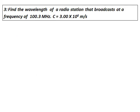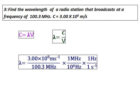Find the wavelength of a radio station that broadcasts at a frequency of 100.3 megahertz; the velocity of light is given. This question is not something new. The only thing is they have given you the frequency in megahertz. The unit of megahertz — or hertz — is the same as the frequency unit seconds inverse. So use the same formula C equals lambda nu. Get the value of lambda by converting megahertz into hertz, and since the value is pretty small, you can report it in meters itself.